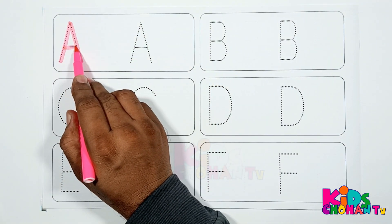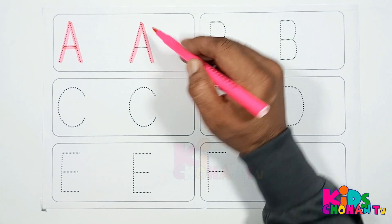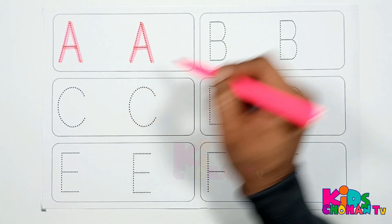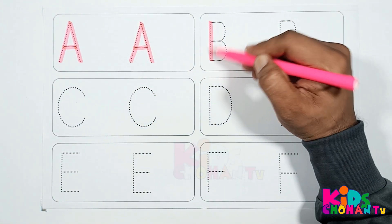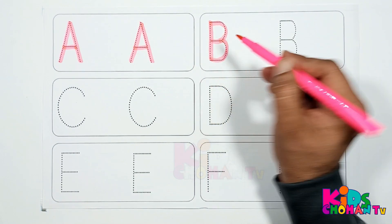Here we are dressing letter A. A is for apple. This is letter B. B is for butterfly.